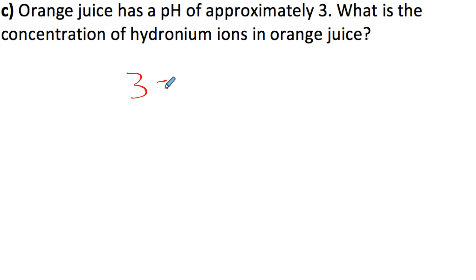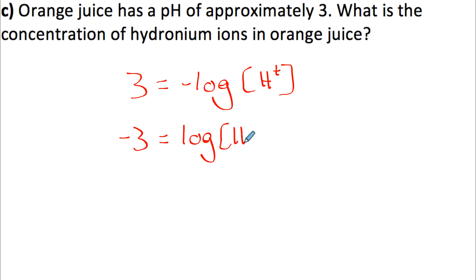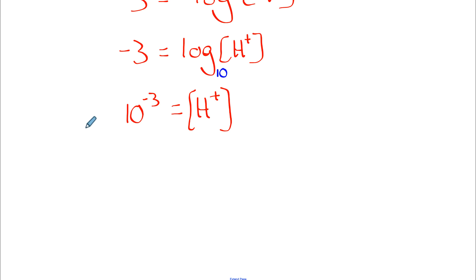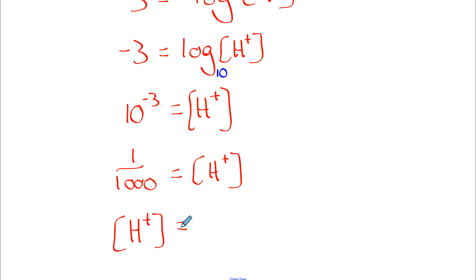Part c: orange juice has a pH of 3. What is the concentration of hydronium ions? This time we're given pH and solving for H+. Starting from 3 equals negative log of H+, divide both sides by negative 1 to get negative 3 equals log of H+. Converting to exponential form: 10 to the negative 3 equals H+. So the hydronium ion concentration is 1/1000 or 0.001 moles per liter.